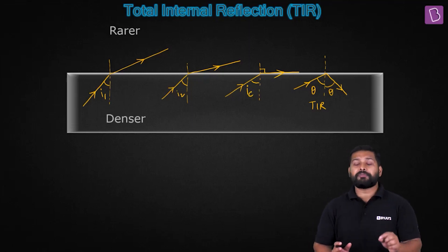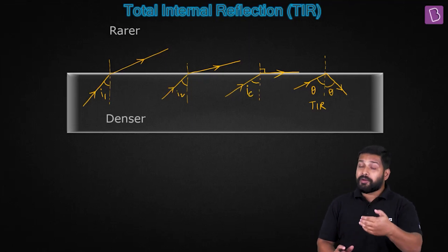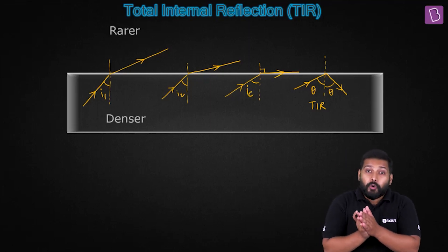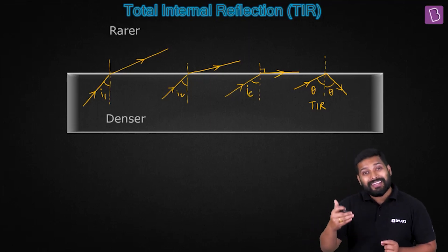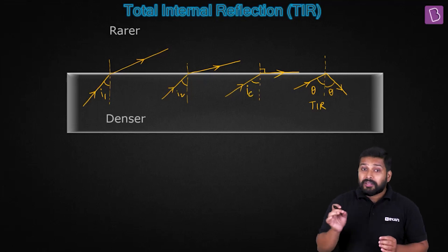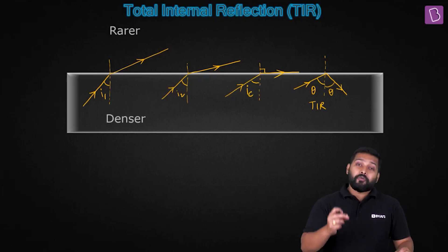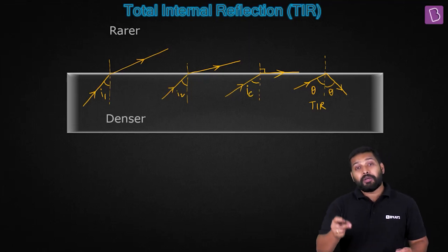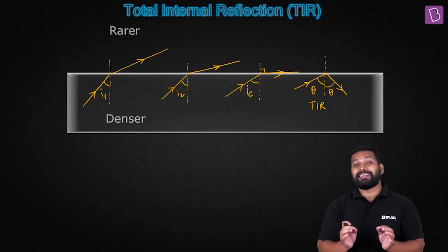In very simple terms, light is traveling from a denser to a rarer medium. As it does so, it bends away from the normal, and as you go on changing the angle of incidence, this bending increases until the refracted ray reaches what we call grazing emergence — traveling along the surface — at which point the angle of refraction is 90 degrees. The angle of incidence at this point is defined as the critical angle.